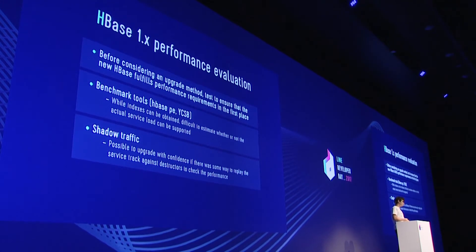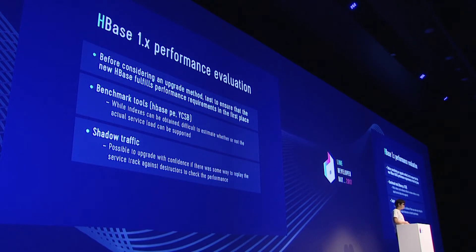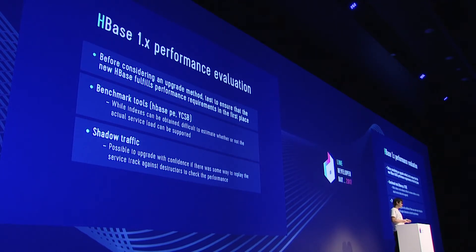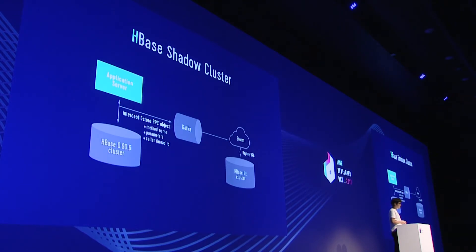So there's nothing we can do unless we upgrade. The first thing we did was a performance assessment. HBase 0.9 and 1.0, when you look at the source code, are completely different — some people say it's even a completely different software. So if we go through the upgrade, can we really see the performance we expected? That was our concern. We wanted to make sure we go through a very thorough performance assessment. Since HBase has many load varieties, we decided to use shadow traffic to do the performance assessment.